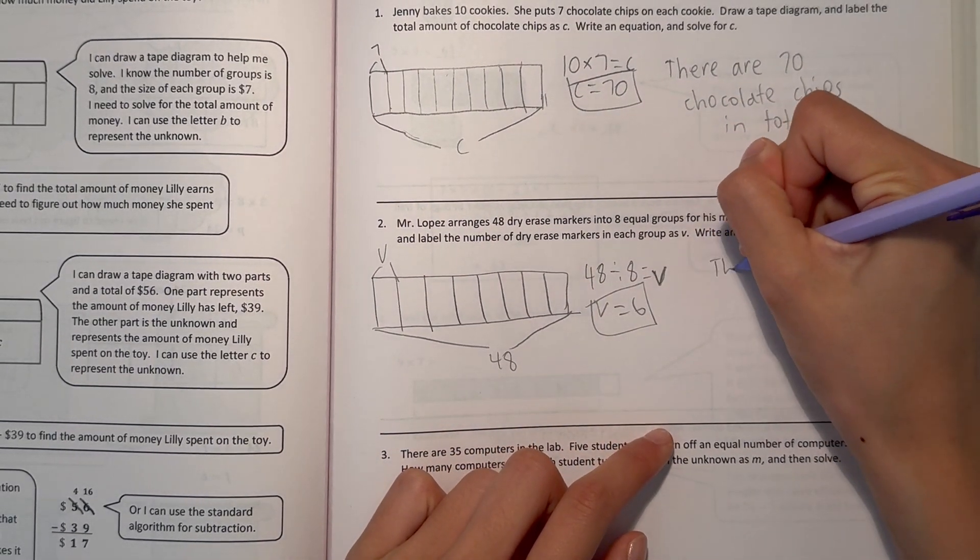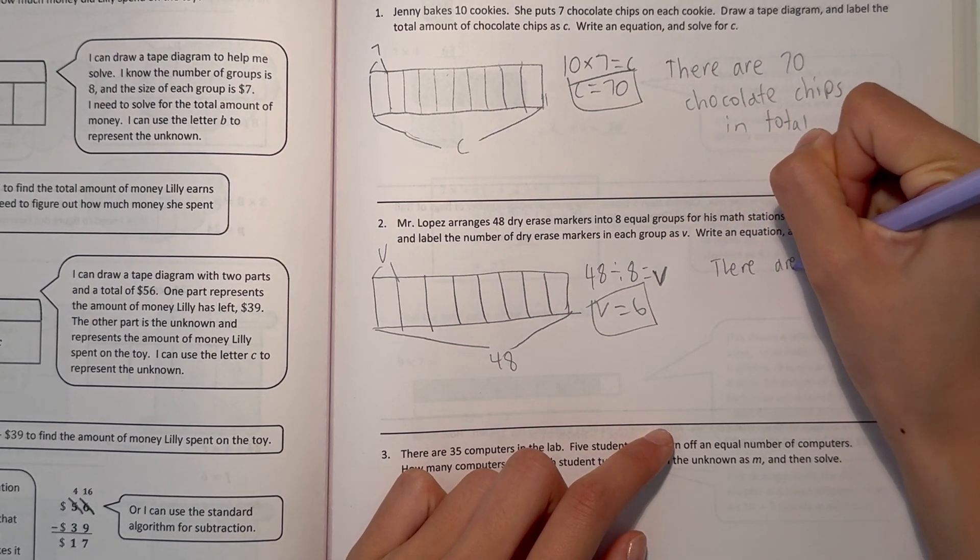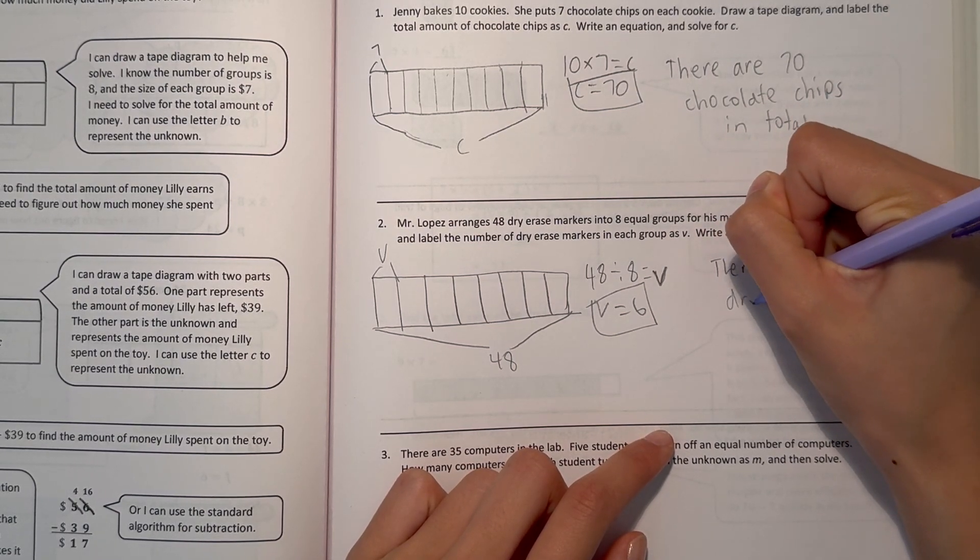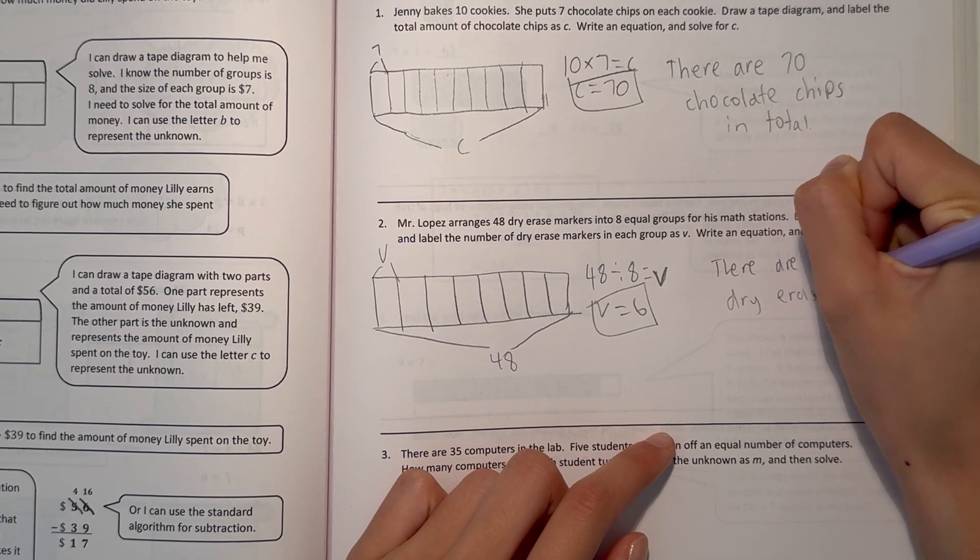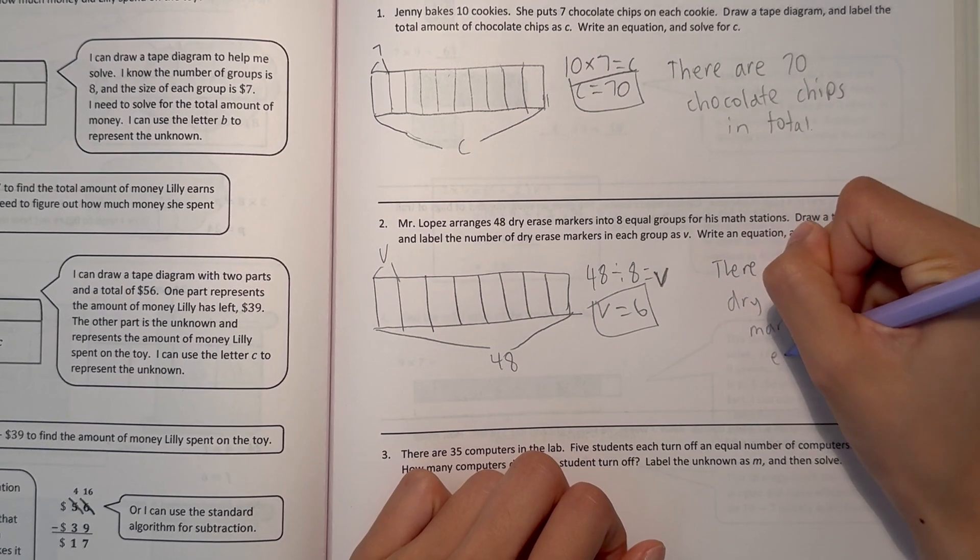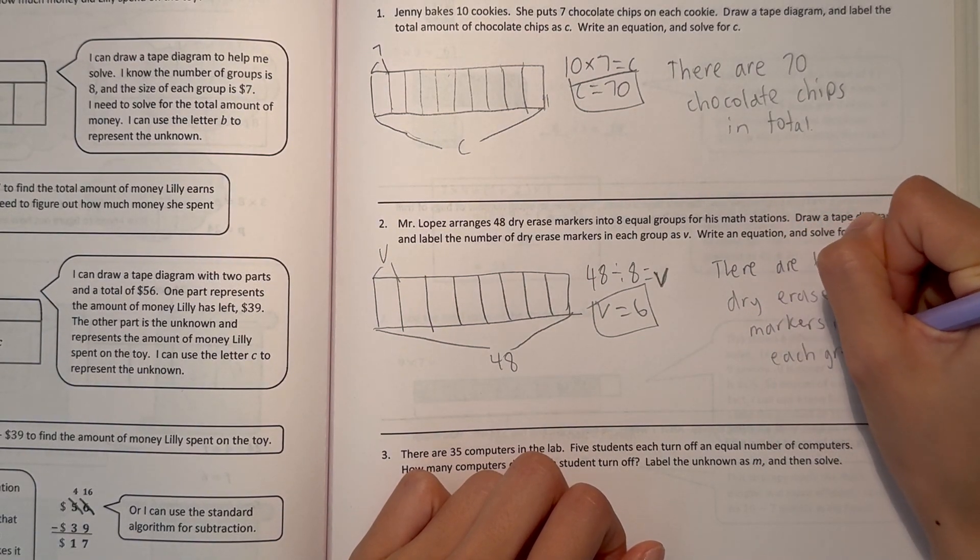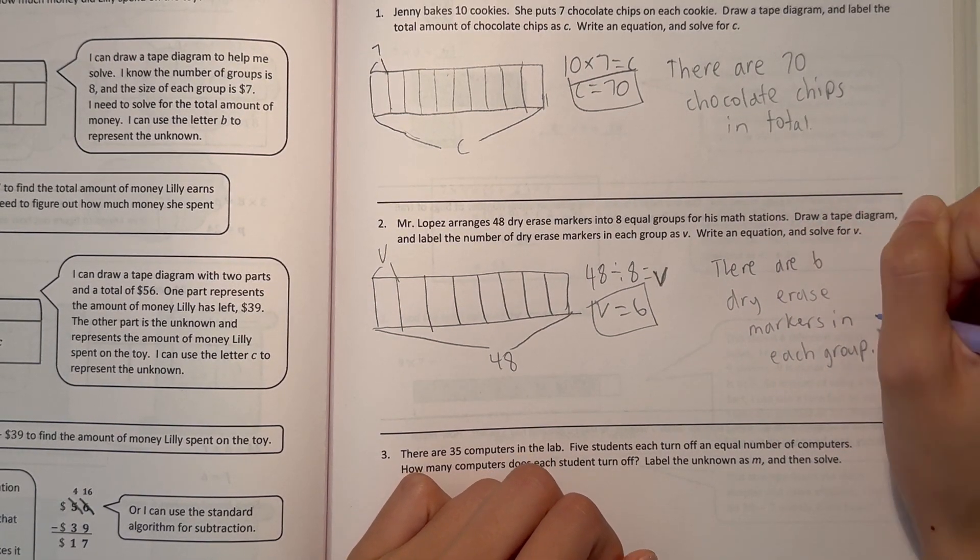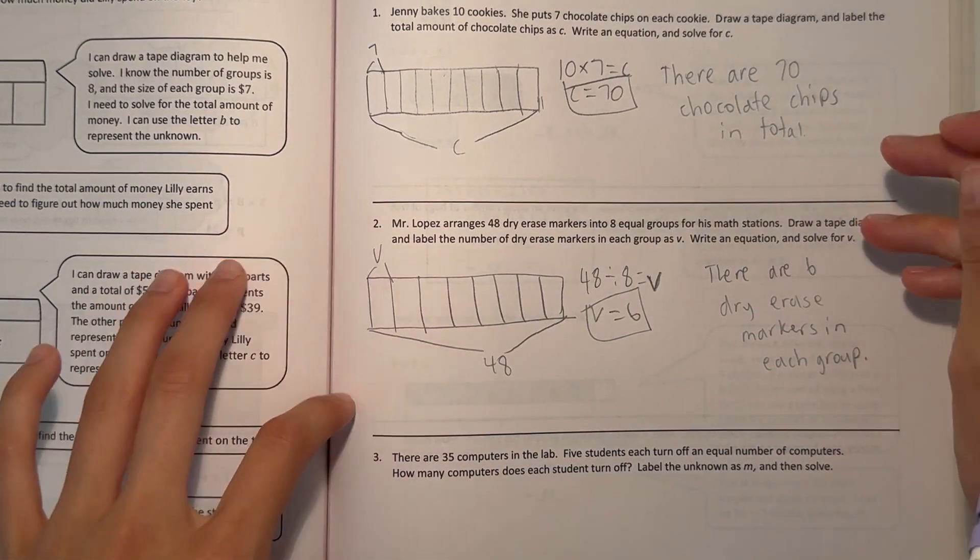There are 6 dry erase markers in each group. Alright, and number 3.